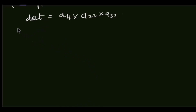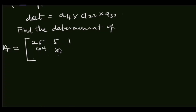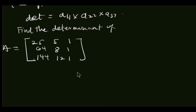So I have a problem: find the determinant of matrix A, which is [25, 5, 1; 64, 8, 1; 144, 12, 1]. This is the matrix we are having. We've been asked to find the determinant and we are going to use Gaussian elimination.